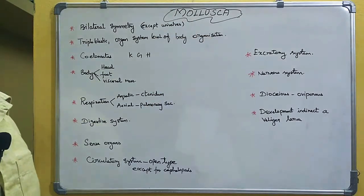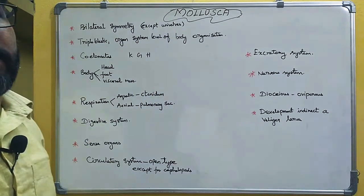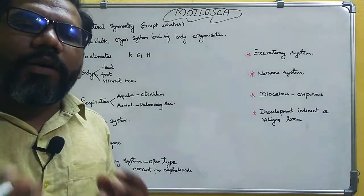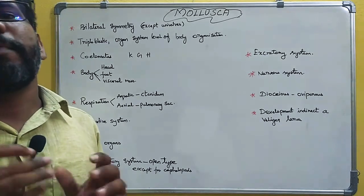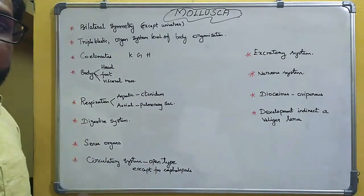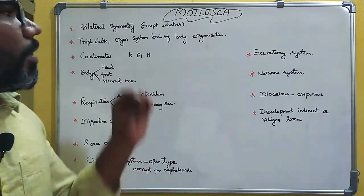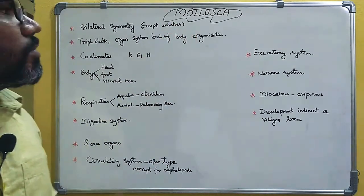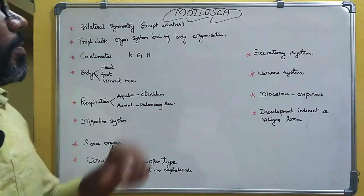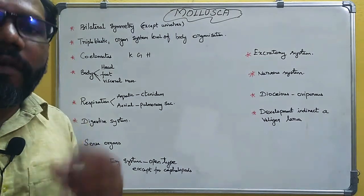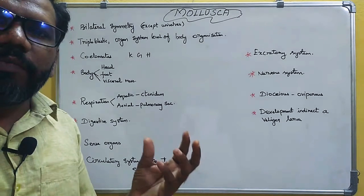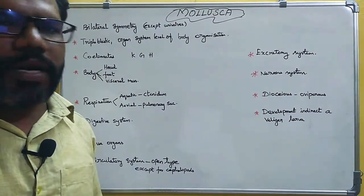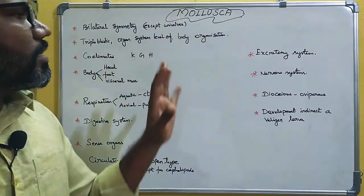Today's topic is Phylum Mollusca. Mollusca is the second largest phylum. It has six classes: Monoplacophora, Amphineura, Scaphopoda, Gastropoda, Pelecypoda, and Cephalopoda. The term 'mollusca' means soft-bodied organisms — soft body organisms covered by shells.